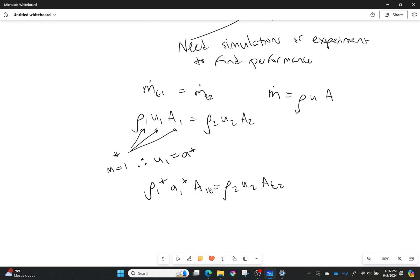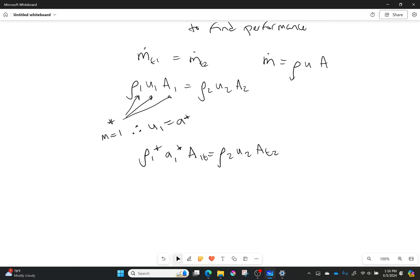So I can bring these around and I can say, well, area throat 2 over area throat 1, this ratio I need to have to make this supersonic wind tunnel work, is going to be equal to my density 1 star over A1 star, over density 2 star, over U2.